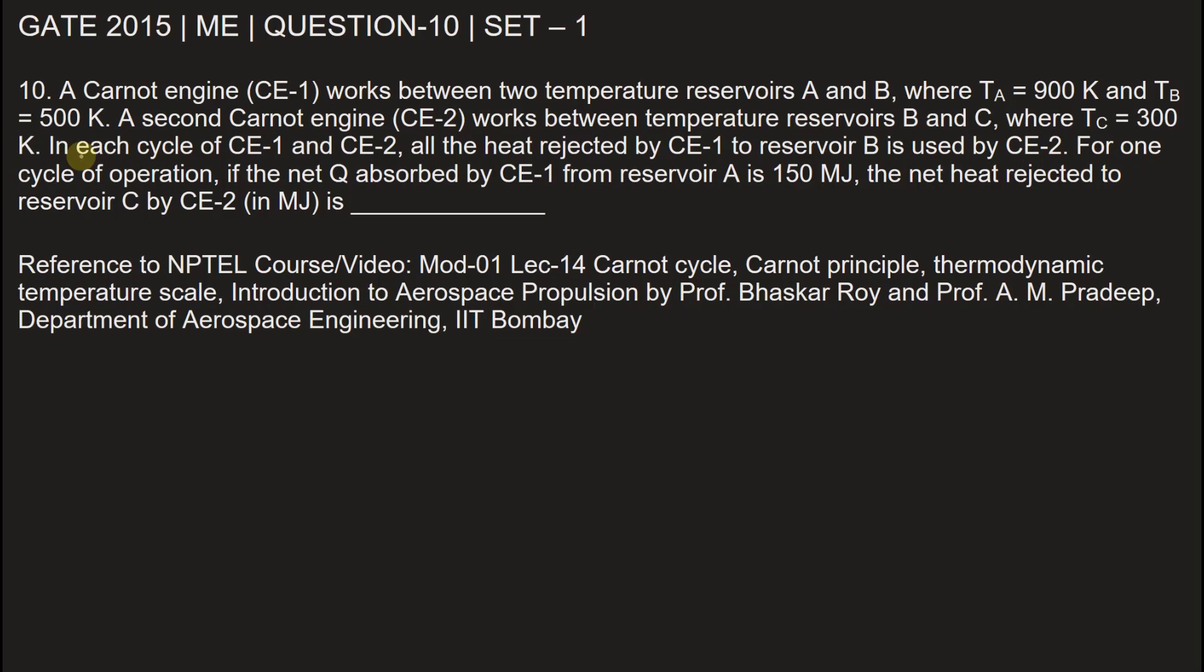For one cycle of the operation, if the net heat absorbed by CE1 from reservoir A is 150 megajoule, the net heat rejected to the reservoir C by CE2 in megajoule is. Now according to the problem, reservoir A is at a temperature TA equal to 900 Kelvin and TB equal to 500 Kelvin.